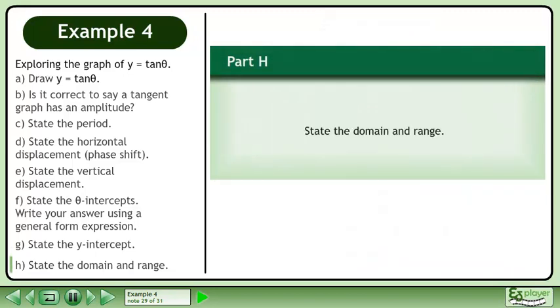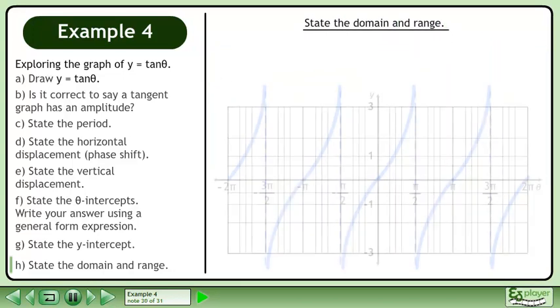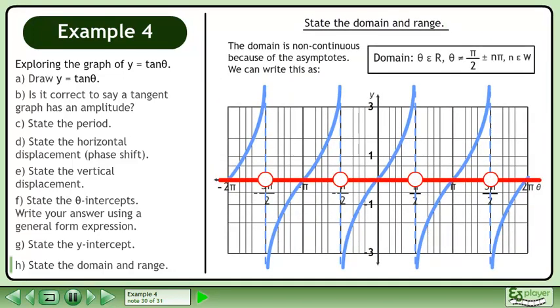In part h, state the domain and range. The domain is non-continuous because of the asymptotes. We can write this as theta belongs to the set of real numbers,